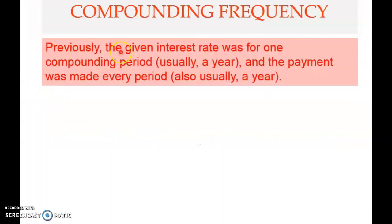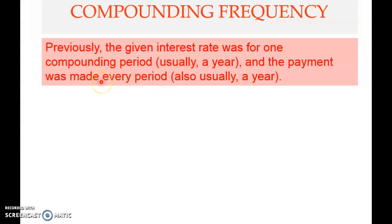Previously, the given interest rate was for one compounding period, usually a year, and the payment was made every period, also usually a year. So it was yearly interest, compounding was made once a year, and the payment — for example an annuity or any other payment — is only at the end of each year.